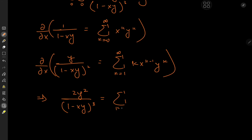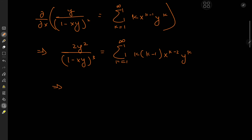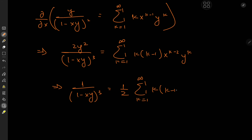On the right we have the sum over k from 1 to infinity of k times (k minus 1) times x to the (k minus 2) times y to the k. We can now start our sum from k equal to 2 instead, and dividing through by 2y squared gives: 1 over (1 minus xy) cubed equals one half the sum over k from 2 to infinity of k times (k minus 1) times x to the (k minus 2) times y to the (k minus 2).